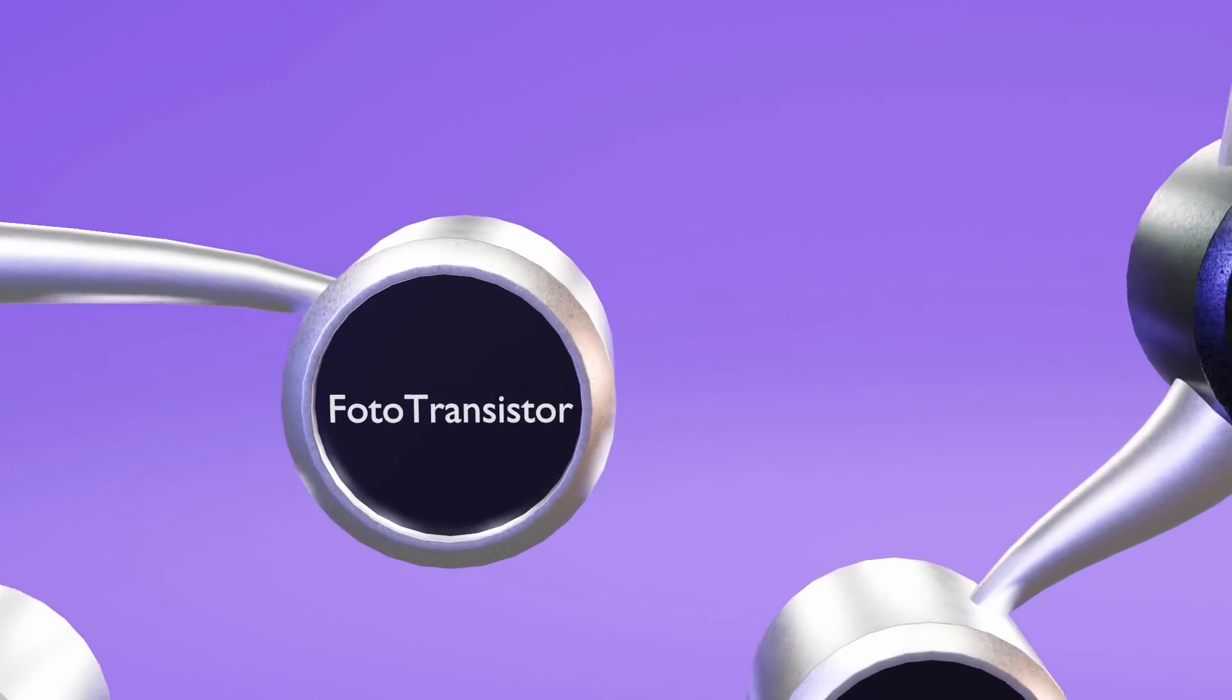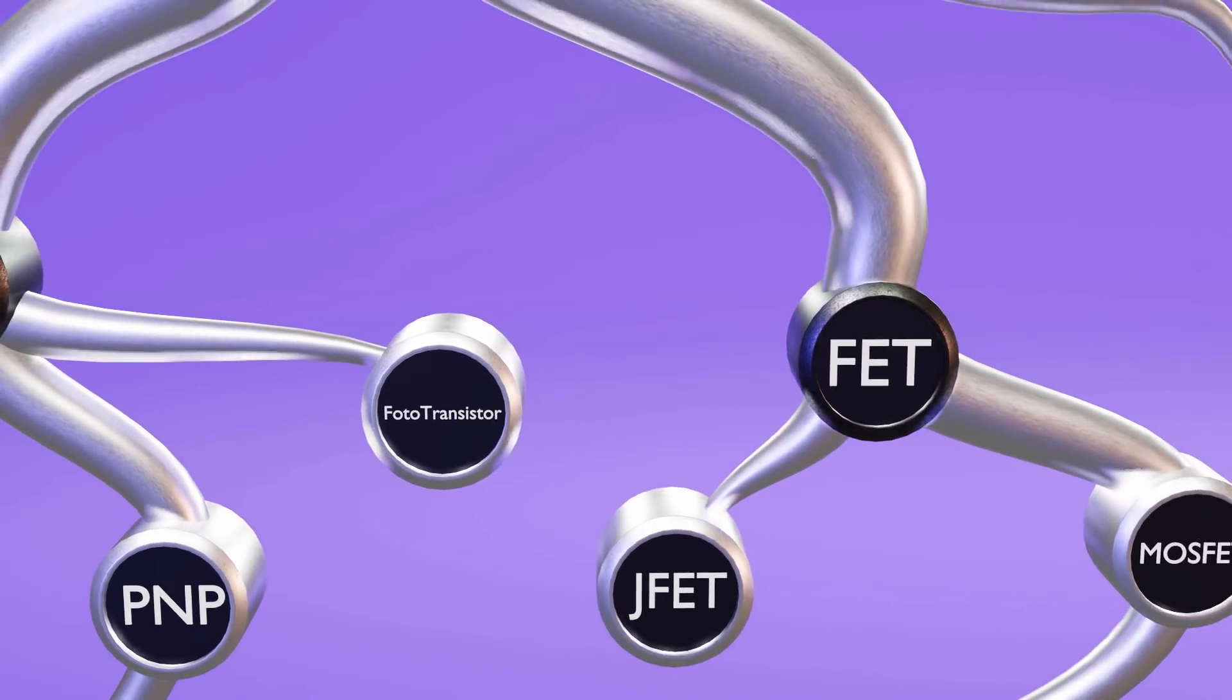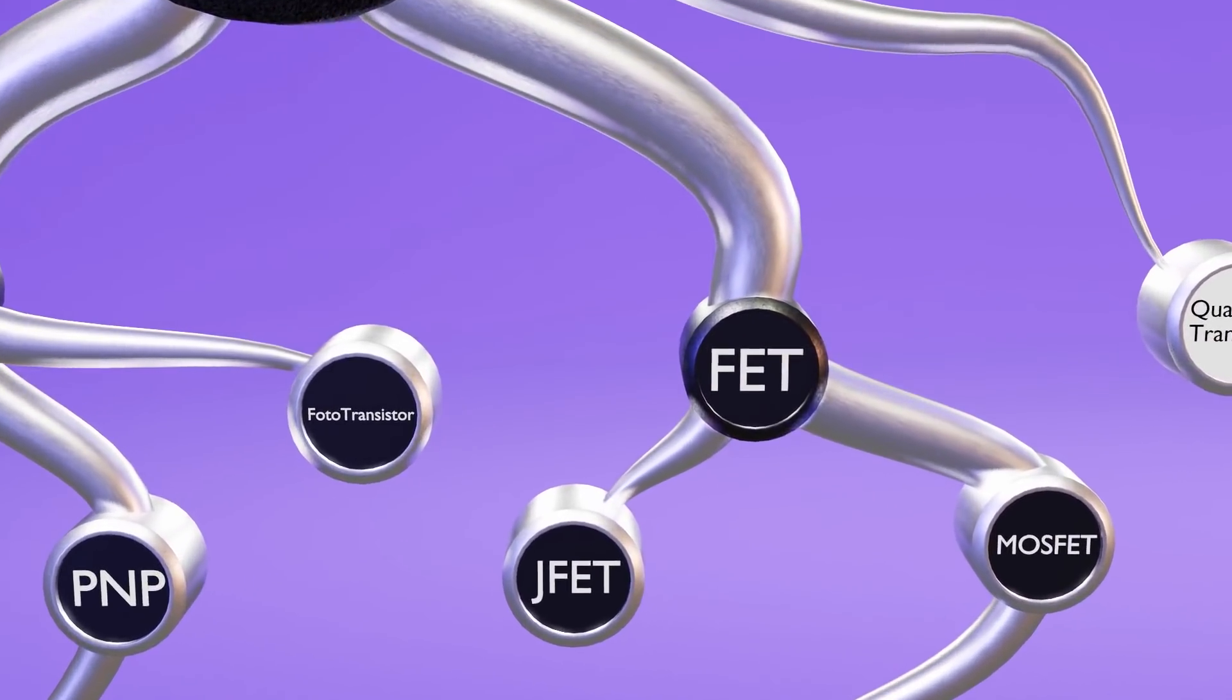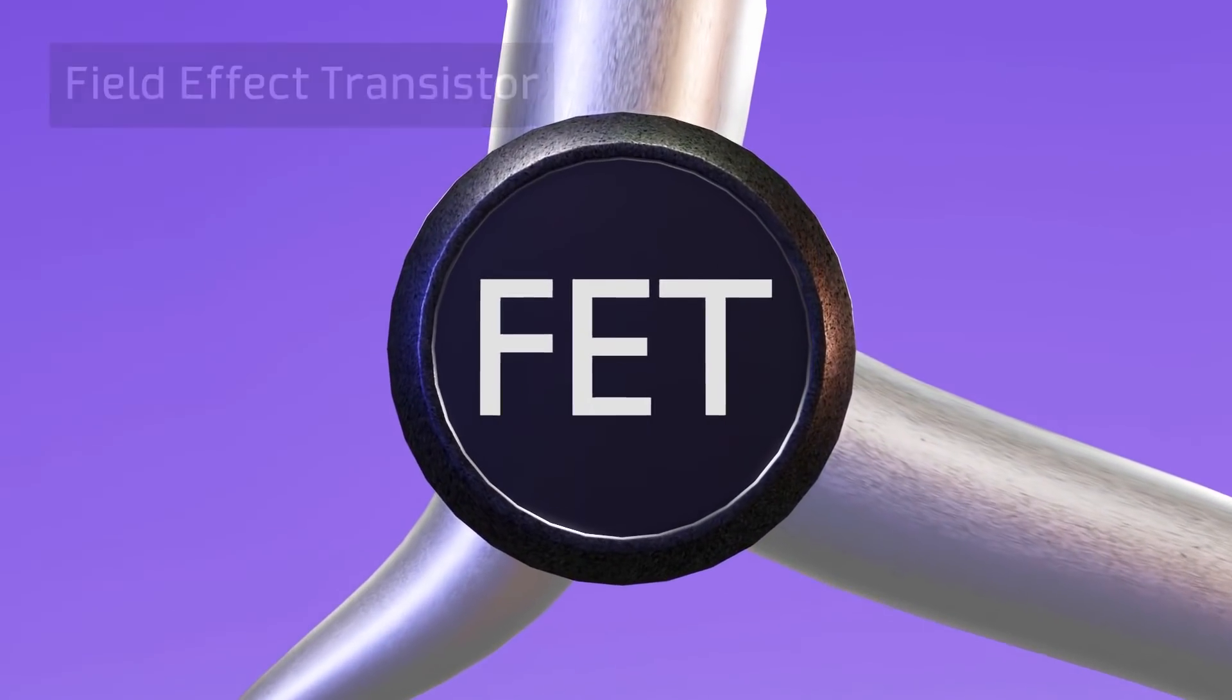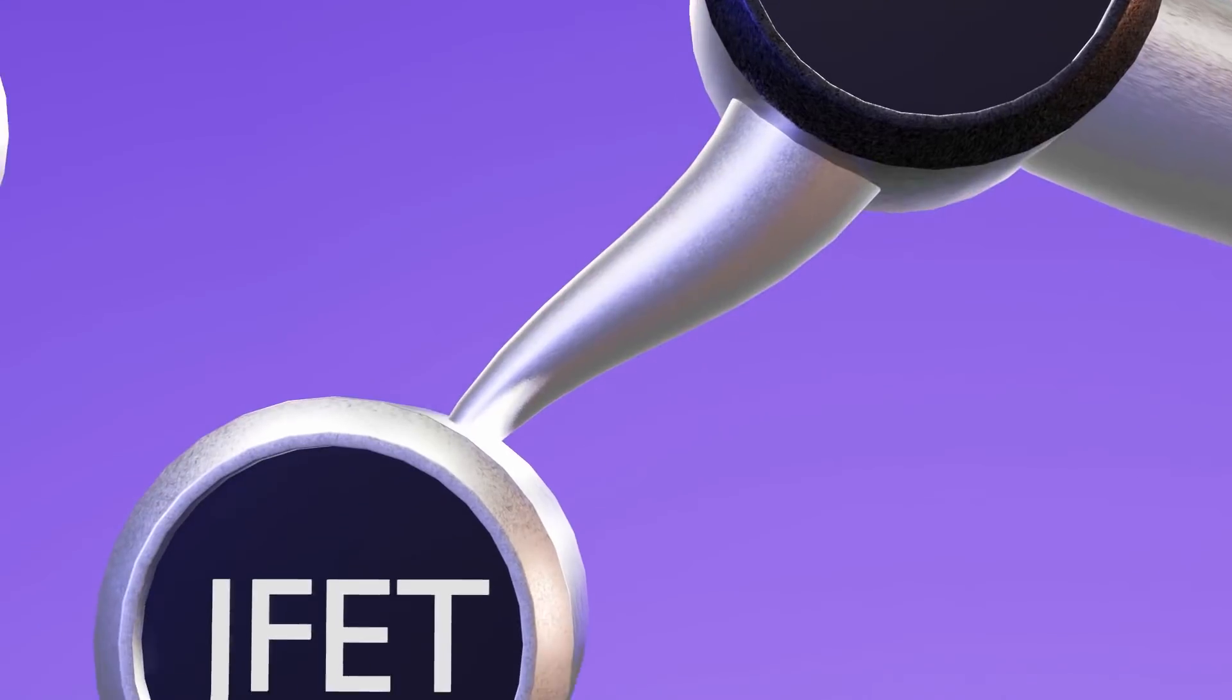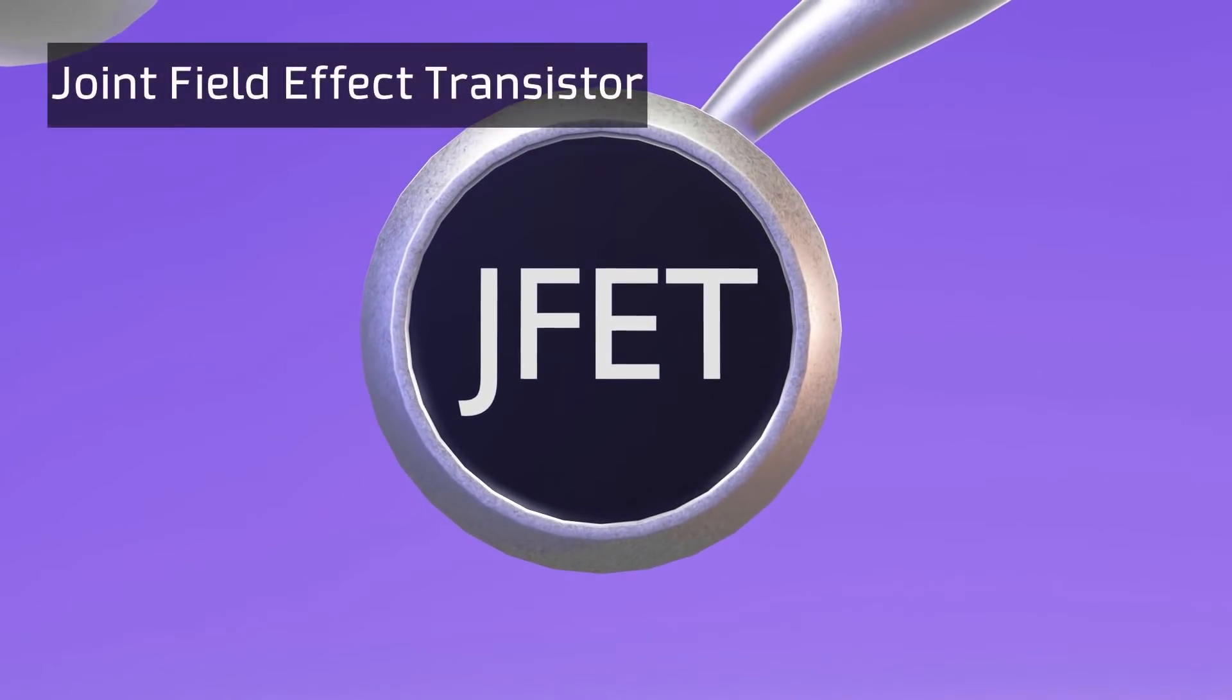Now for the fifth type, let's go to the other branch of our family tree of transistors. The following transistors are known as field effect transistors or FET, and the first one, which would be the fifth of our list, is the JFET, or junction field effect transistor.